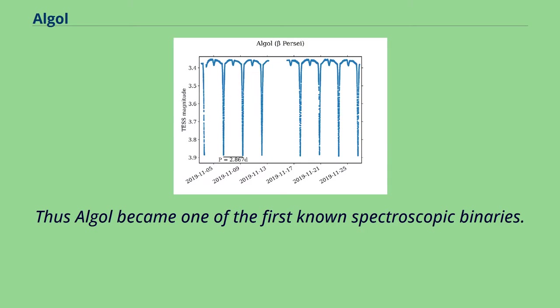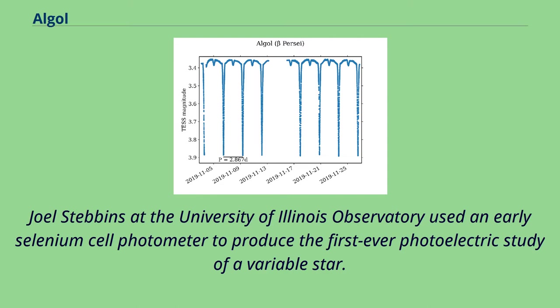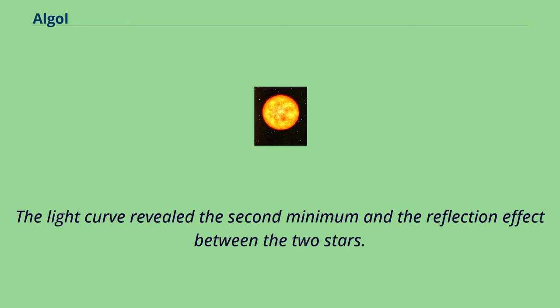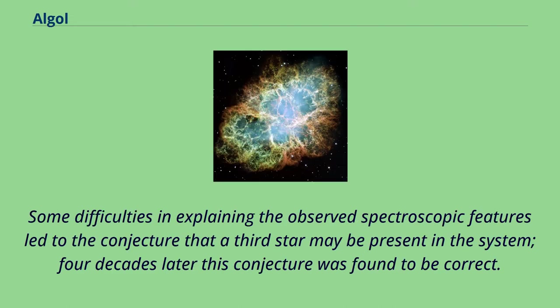Thus Algol became one of the first known spectroscopic binaries. Joel Stebbins at the University of Illinois Observatory used an early selenium cell photometer to produce the first-ever photoelectric study of a variable star. The light curve revealed the second minimum and the reflection effect between the two stars. Some difficulties in explaining the observed spectroscopic features led to the conjecture that a third star may be present in the system. Four decades later this conjecture was found to be correct.